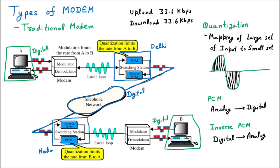The problem is that the line coming from the telephone exchange to our home is not digital — it is an analog line, and this is the problematic factor. This line is called the local loop. Similarly, the line from your exchange to your home is also analog. Only because of this analog line, a modem is applied at home — one modem at my home and one at your home.